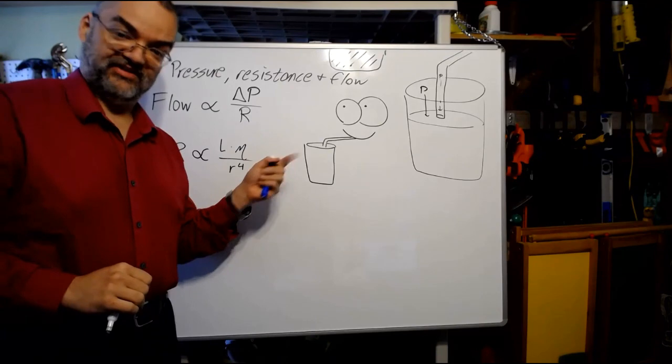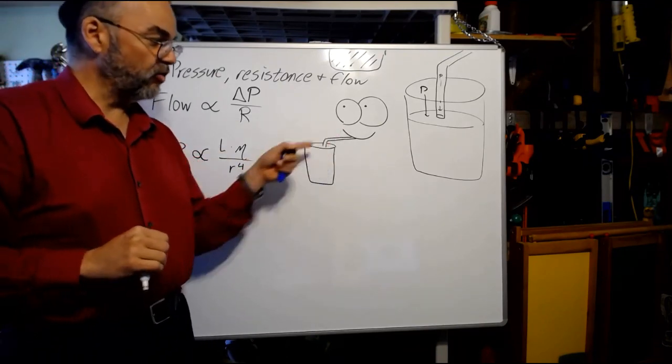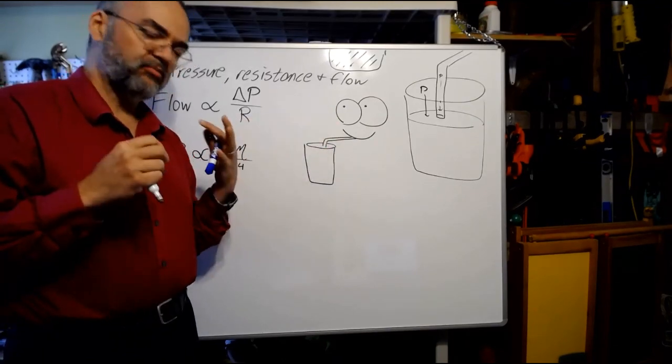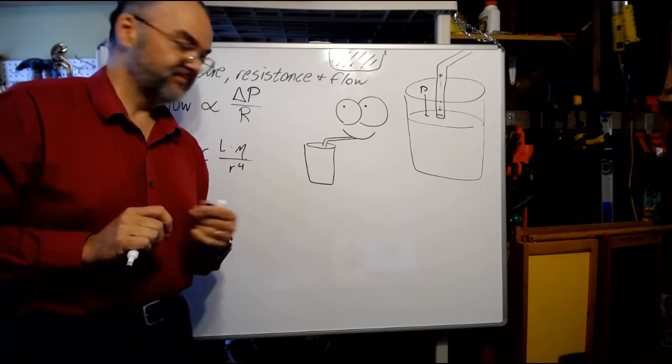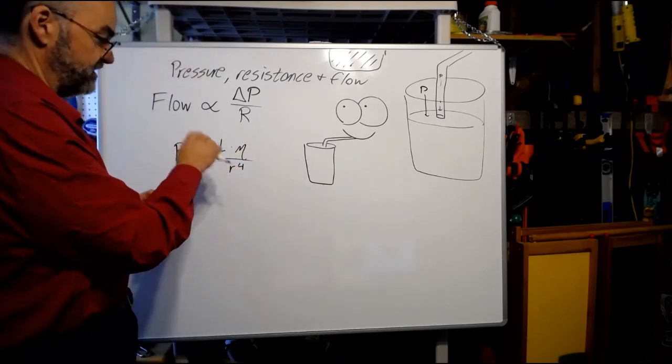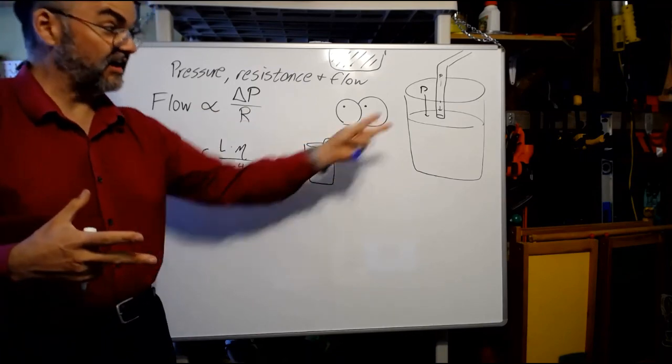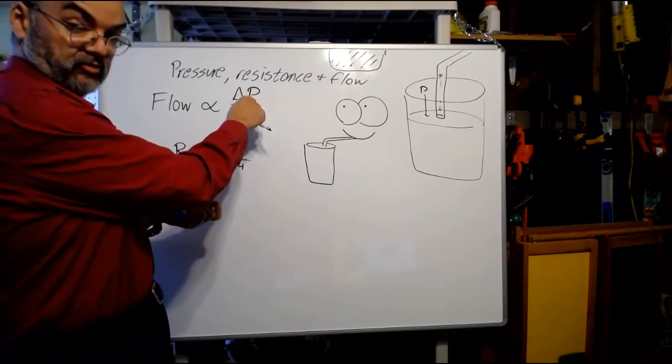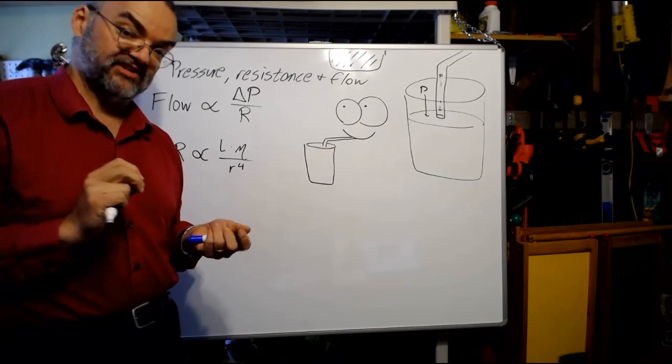Back to this. So, what's going to determine how quickly milkshake flows through this straw? How much milkshake does this poor individual manage to get? And how can they maximize that? Well, let's think about the resistance to flow. First of all, we could talk about pressure. The harder I suck, the bigger of a pressure difference I make, the more flow I will get, all else being equal. Greater pressure difference means greater flow. But we also have to think about the resistance to flow.